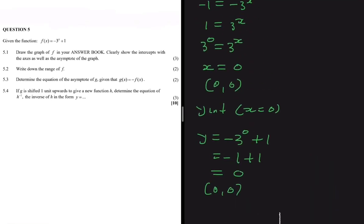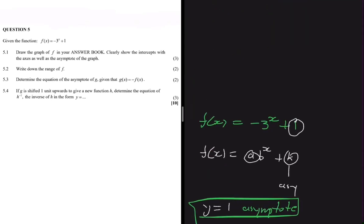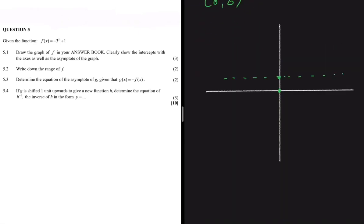From the general formula, if a is less than 0, our graph will be below the asymptote, and if a is greater than 0, it will be above. Since f(x) = -3^x + 1, our graph should be below the asymptote — something like this, passing through the intercepts. That's essentially how we answer those kinds of problems.